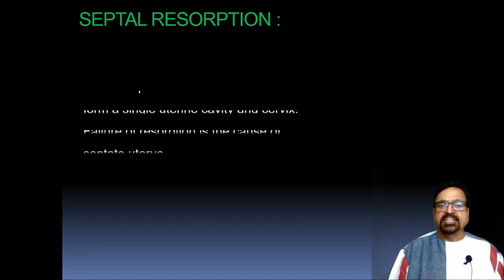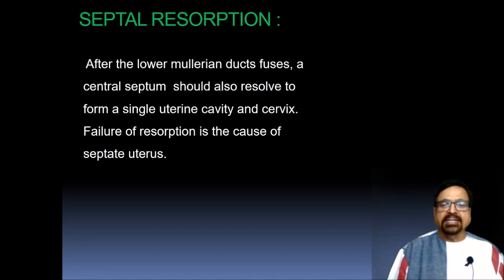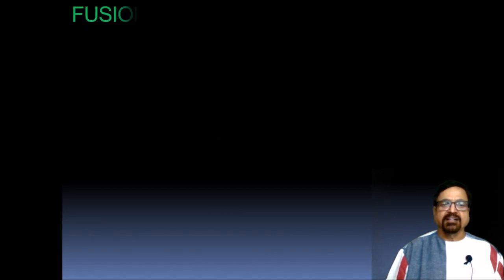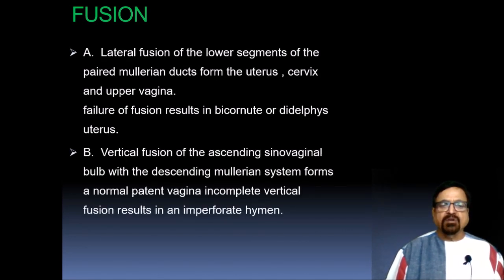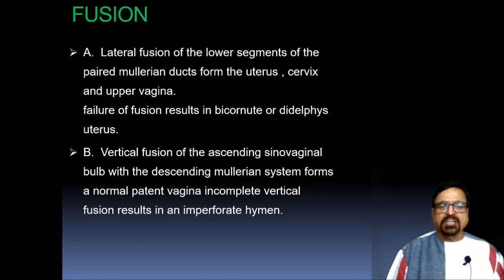Regarding septal resorption — this is an embryological process: after the lower Mullerian duct fuses, a central septum should also resolve to form a single uterine cavity and cervix. Failure of resorption causes a septate uterus. Regarding fusion types: lateral fusion of the lower segment of the paired Mullerian ducts forms the uterus, cervix, and upper vagina; failure of fusion results in bicornuate or didelphys uterus. Vertical fusion of the ascending sinovaginal bulb with the descending Mullerian system forms a normal and patent vagina; incomplete vertical fusion results in an imperforate hymen.